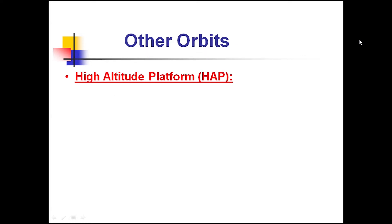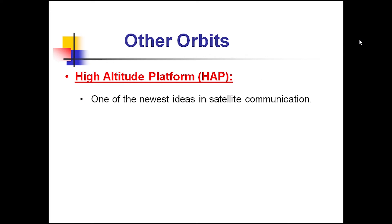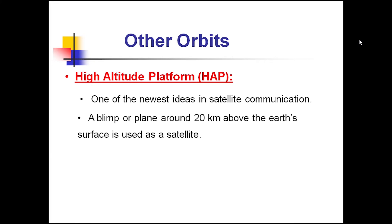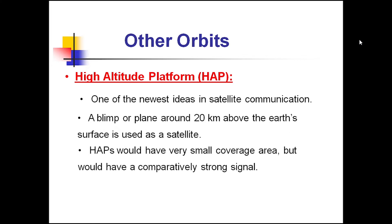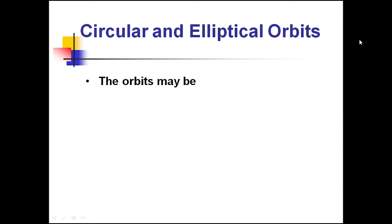High Altitude Platform, or HAP, is one of the newest ideas in satellite communication. A plane around 20 km above the Earth's surface is used as a satellite. HAP would have a very small coverage area but would have comparatively strong signals, and it is cheaper to put these satellites in these positions.